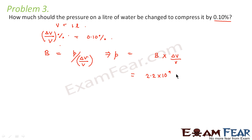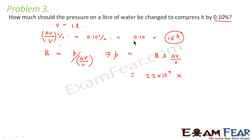The value of delta V by V is given as 0.10 percent, which equals 10⁻³. Putting this value in, we get P = 2.2 × 10⁹ × 10⁻³ = 2.2 × 10⁶ Newton per meter square. So this much pressure needs to be applied so that the water gets compressed by 0.10 percent.